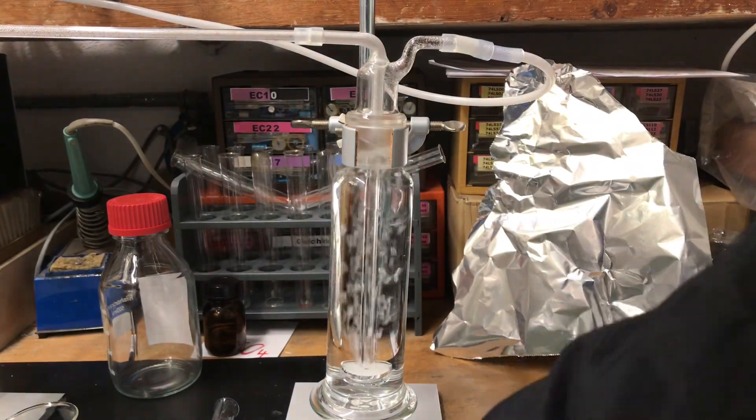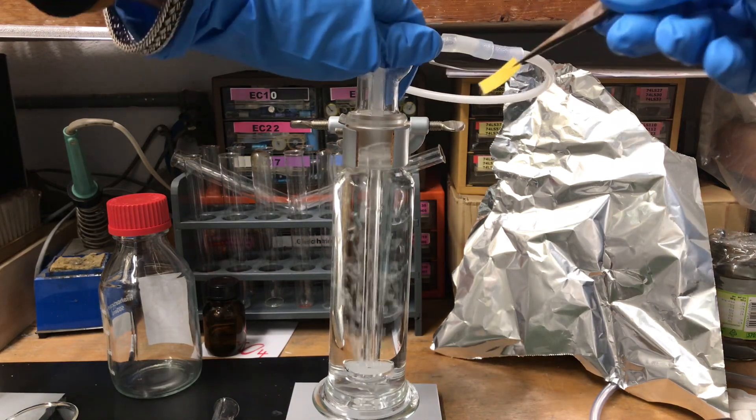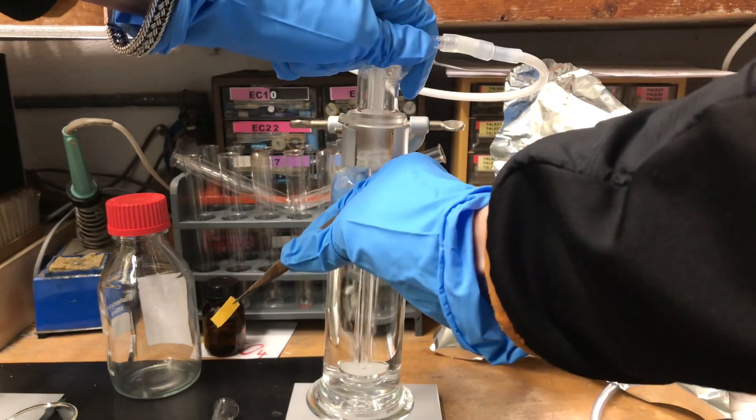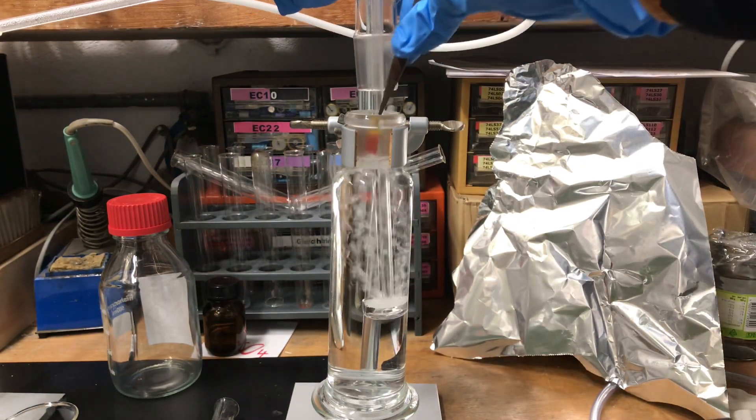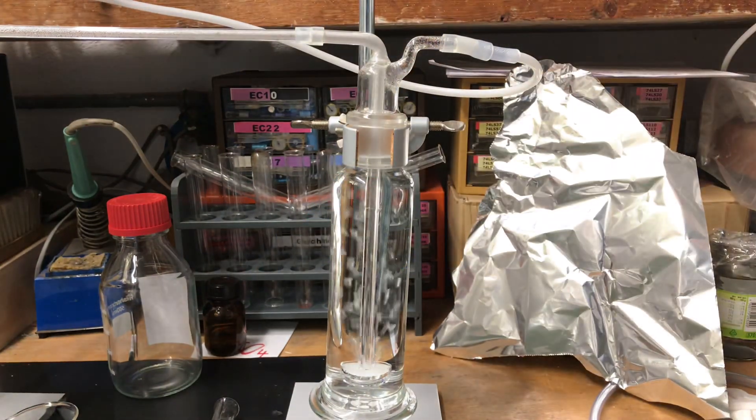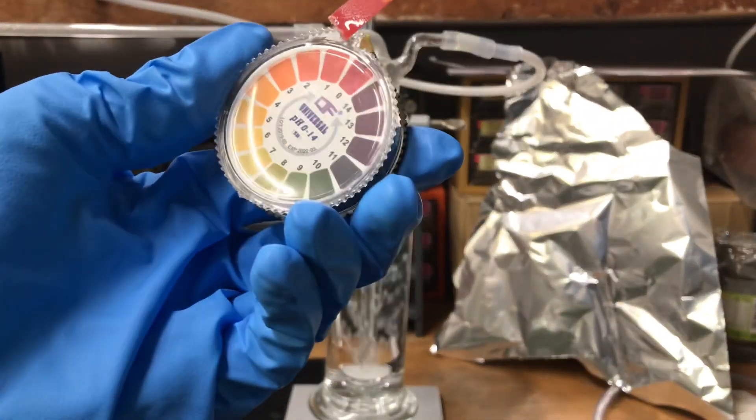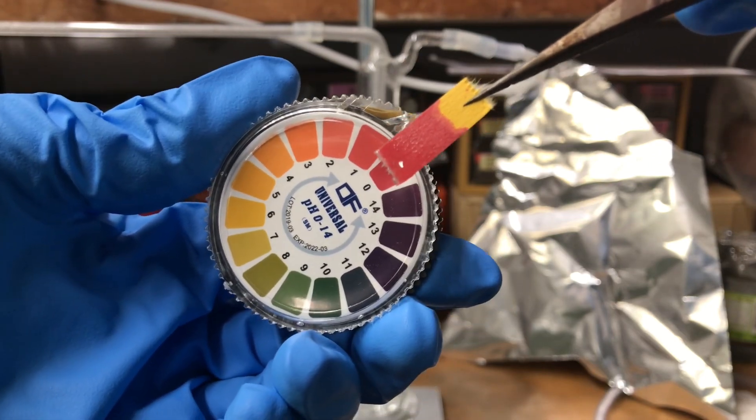The apparatus was now running for around one hour and I am going to open up the wash bottle and check the pH of our nitric acid. You can see that our pH paper turned a bright red color and the pH seems to be around zero.